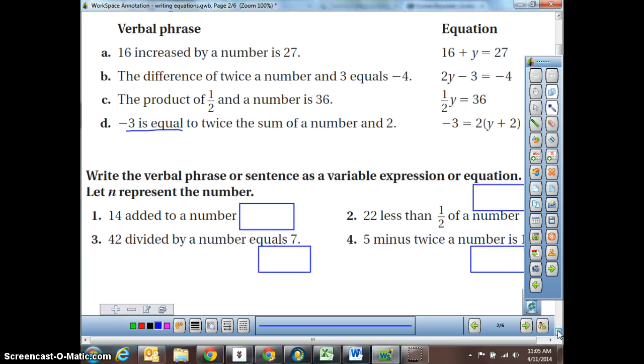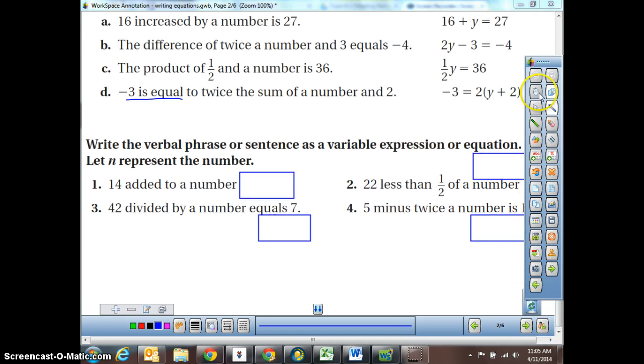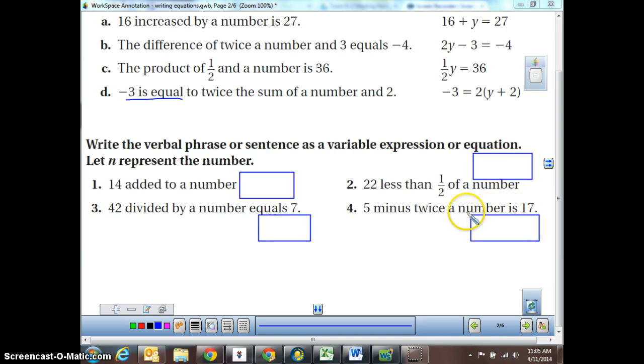We're going to scoot down a little bit. And I'm going to just make that smaller. Write the verbal phrase or sentence as a variable expression or equation. Let n represent the number. So 14 added to a number. Here we're just looking at an expression. There's no is anything. There's no equals anything. 14 added to a number. That means we have n plus 14.